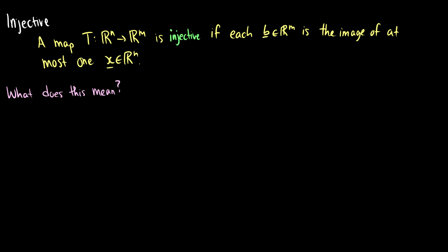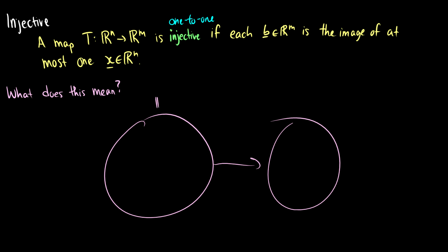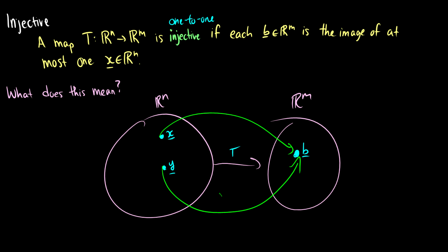Injective — also called one-to-one functions — means a map T from Rⁿ to Rᵐ is injective if each vector b in Rᵐ is the image of at most one x in Rⁿ. If we have two vectors x and y, and x maps to b, then y cannot also map to b. Basically, each transformation is unique: if you take a unique vector in Rⁿ, you get a unique vector in Rᵐ.